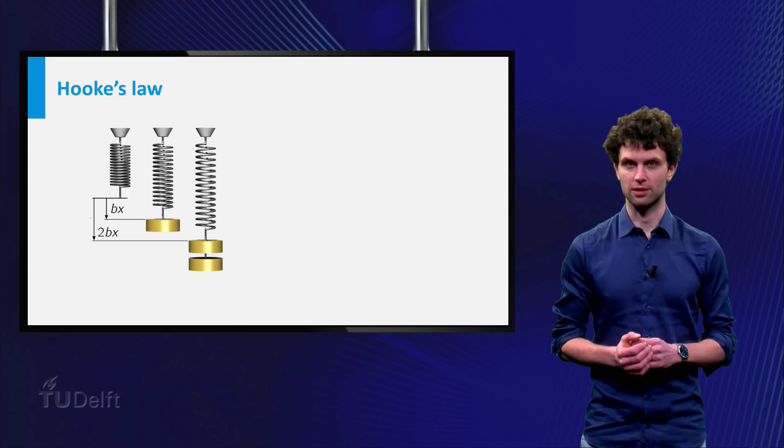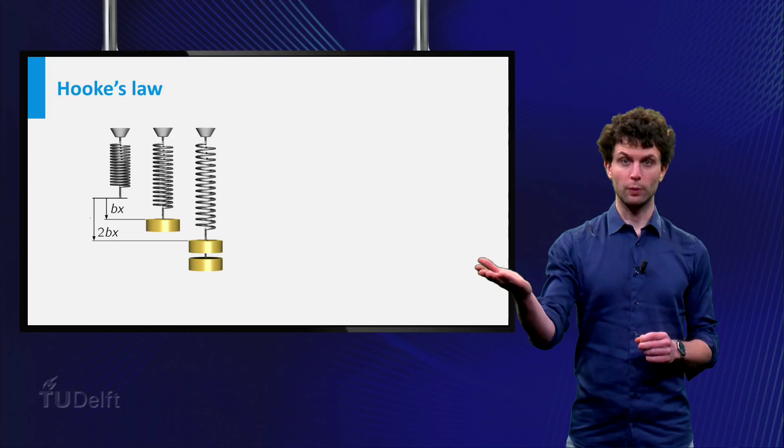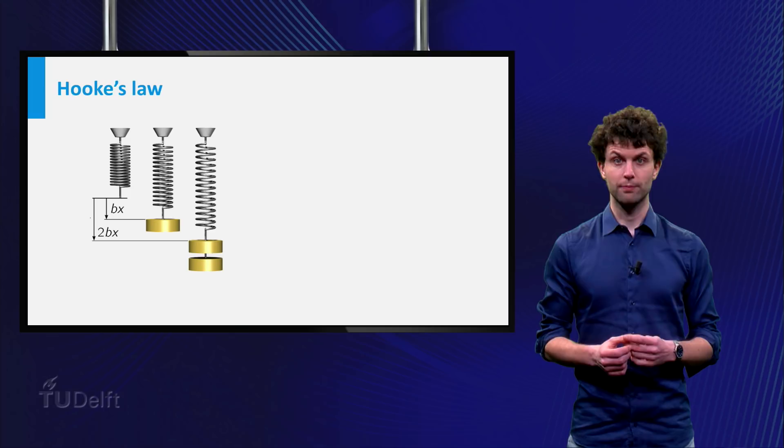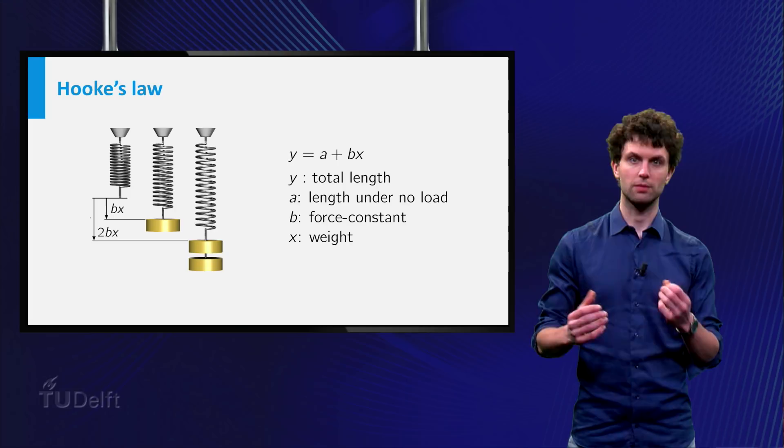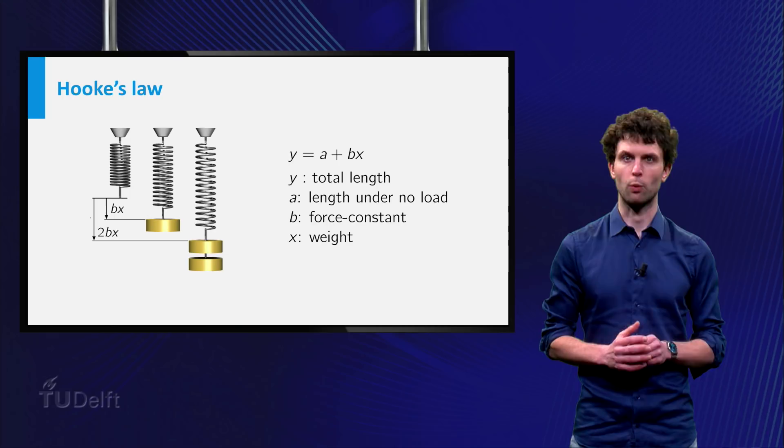Consider the following example from physics. If we hang a weight on the end of a spring it will stretch, and for different weights the spring will stretch to different lengths. According to Hooke's law, the amount of stretch is proportional to the weight of the load. That is, you have the relationship y = a + bx.